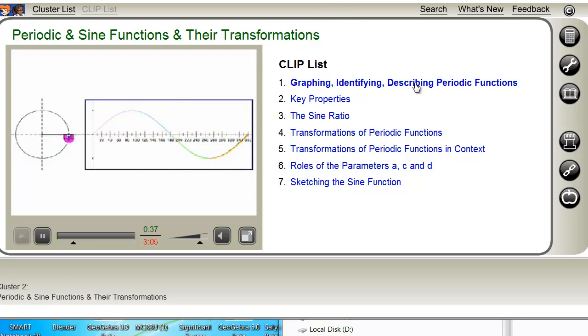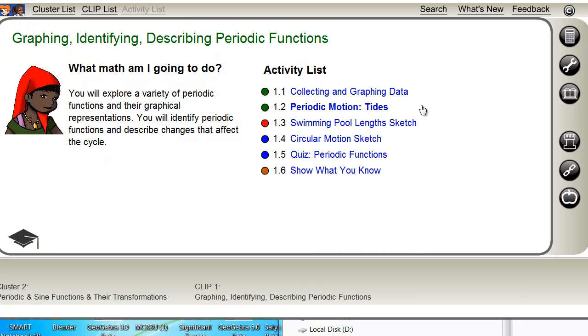We're going to start out with Clip List 1, and you'll notice there's actually six activities within Clip List 1 that we're going to be going through. Okay, so we're going to start by collecting and graphing data.